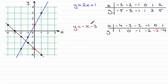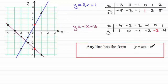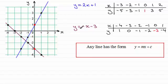Now, any line has a particular form. That form is often referred to as y equals mx plus c, m and c being constants. You can see in these two examples we've got that form. Here we've got y equals a constant — 2 in this case — times x, plus another constant c which is plus 1. In this equation here, we've got a constant m times x, that constant is minus 1, and then we're adding the constant c — we're adding minus 3, so c would be minus 3.